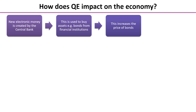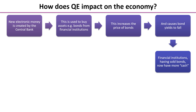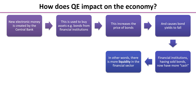This increases the price of the bonds because the government wants them back now and so ends up paying more than the face value of the bond. That causes the yields to fall, so in other words the interest rate falls. Financial institutions, having sold bonds, now have got more cash. They've swapped their IOUs for cash and they're sitting on a lot of cash now — in other words there is more liquidity in the financial sector.